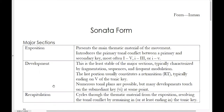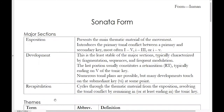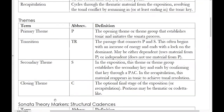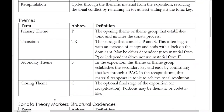So those are the three main sections. Moving on to the main themes within a sonata — each of the four themes that we're about to discuss typically appear in both the exposition and the recapitulation of a sonata.